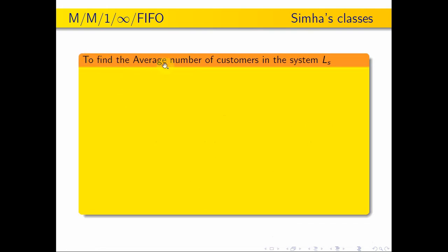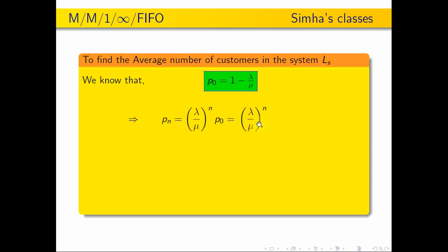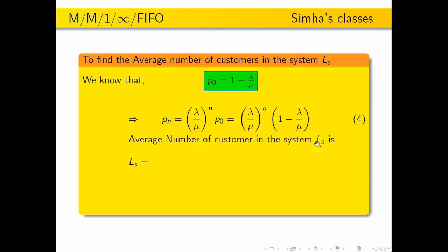Now I am going to find the average number of customers in the system. Ls is equal to the expectation of n, which is the mean. To find the average number of customers in the system, if there are n customers in the system, I can write the formula as summation n equals 0 to infinity of n into Pn. Now we apply the Pn value.